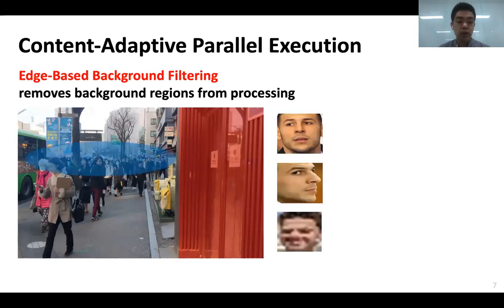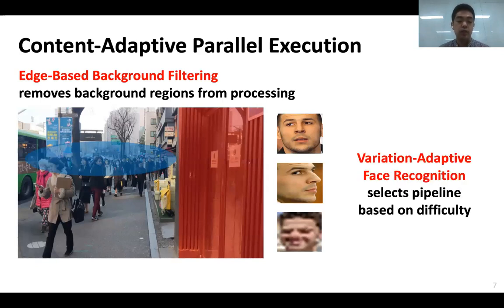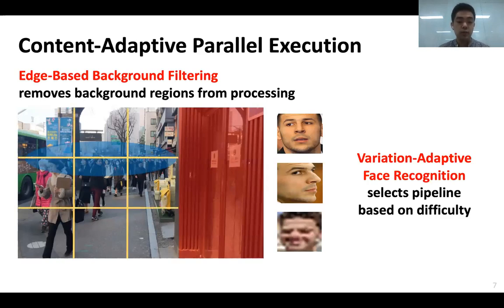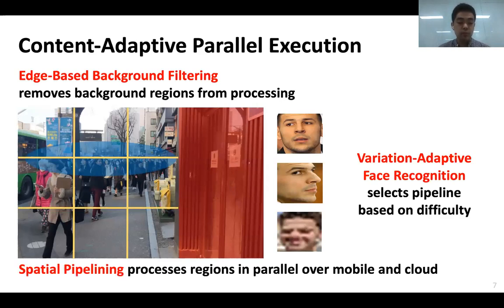Second, for the remaining regions, the detected faces have various recognition difficulties based on how they are captured. Variation-adaptive face recognition adaptively selects the recognition pipeline for each detected face based on its recognition difficulty. Finally, identifying faces in different regions of the scene is spatially independent. Spatial pipelining processes these regions in parallel over mobile and cloud.